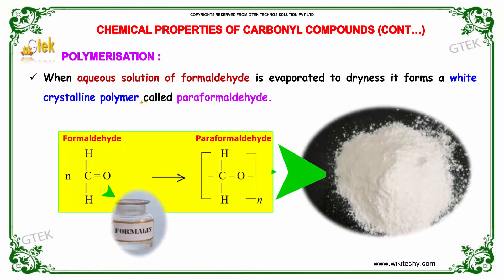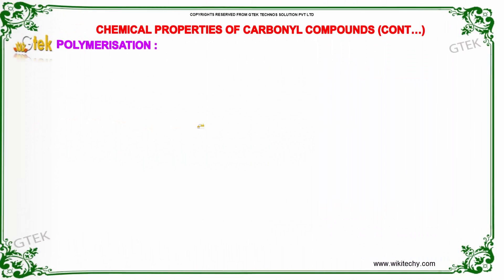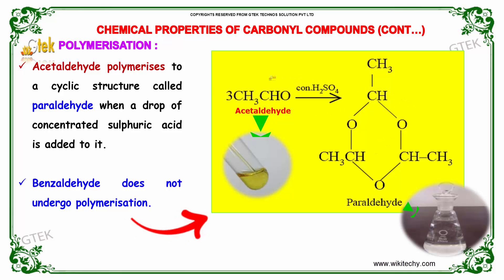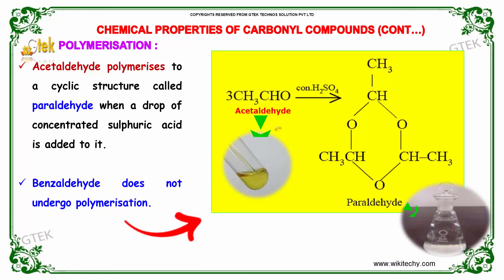Polymerization: When an aqueous solution of formaldehyde is evaporated to dryness, it forms a white crystalline polymer called paraformaldehyde, as we can see here. Acetaldehyde polymerizes to a cyclic structure called paraldehyde, which is shown here, when a drop of concentrated sulfuric acid is added to the acetaldehyde. Benzaldehyde does not undergo polymerization due to its aromatic nature.